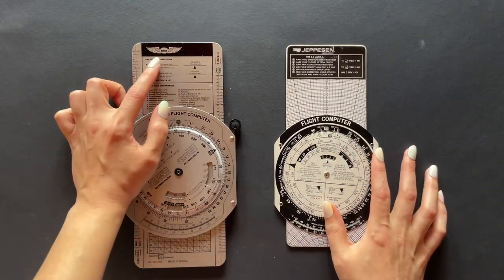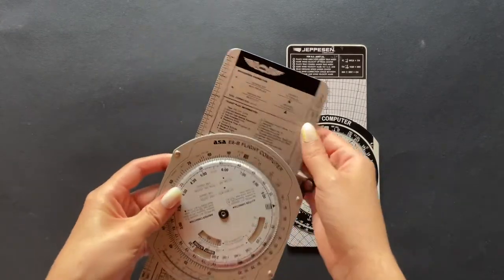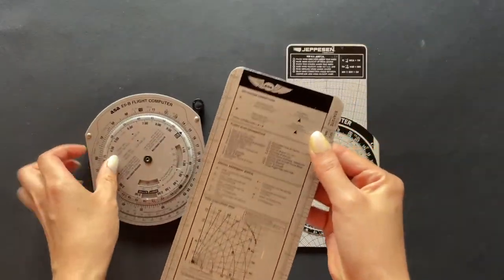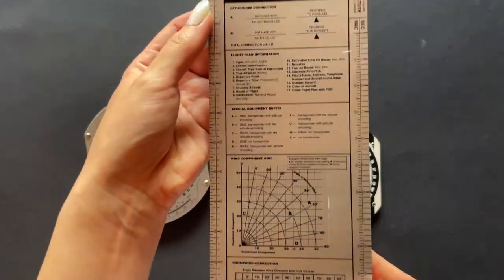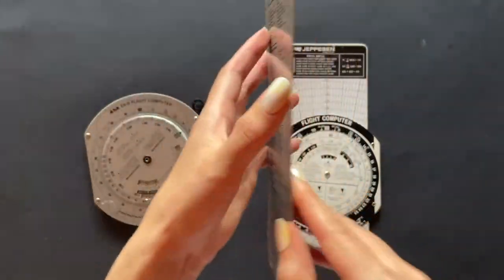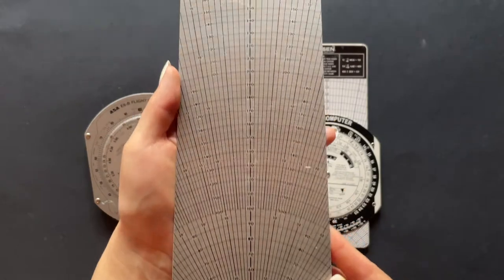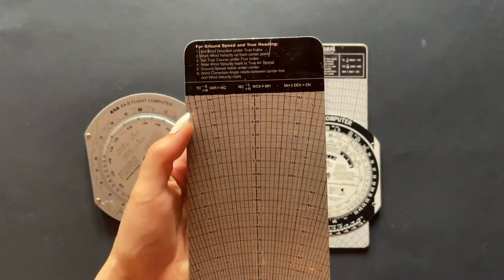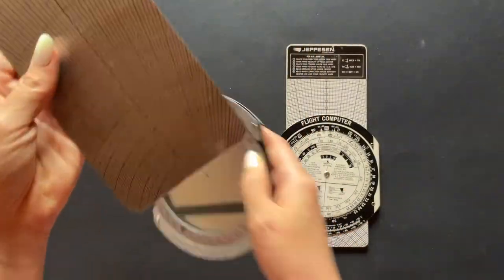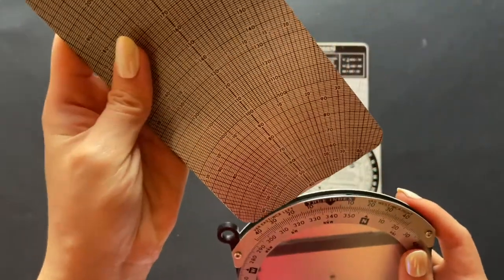If you have the ASA one, you will see that the slide on one side will have an ASA logo up at the top, along with some formulas, while on the other side, we have this graph for wind calculations. So you will use this side when working with this practice question.